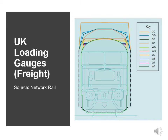After nationalisation, a standard static gauge was defined in 1951 that would virtually fit everywhere in the network. The W6 gauge is a refinement to the W5, and the W6A changed the lower body to accommodate third rail electrification. Network Rail uses a W loading gauge classification system for freight transport ranging from W6A, the smallest, through W7, W8, W9+, W10, W11, and W12, the largest.